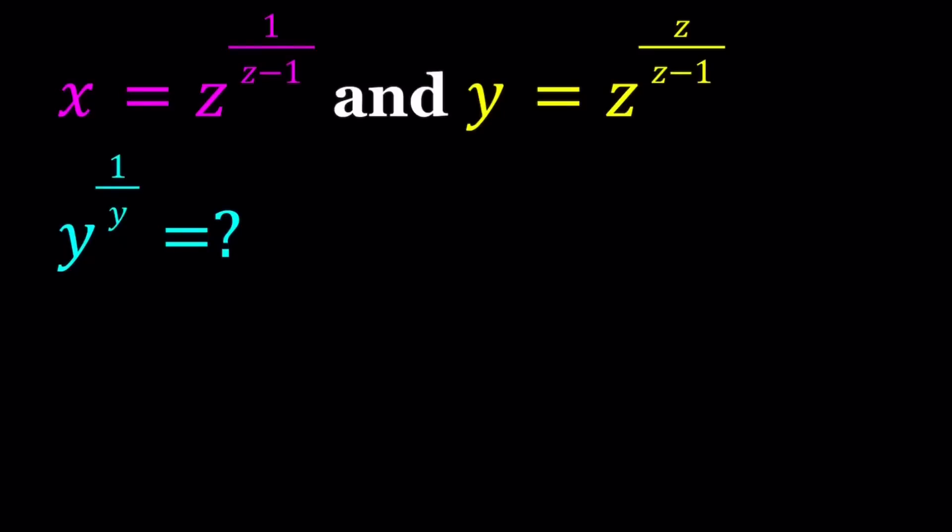Hello everyone. In this video, we're going to be solving an exponential system. We have x equals z to the power 1 over z minus 1, and y equals z to the power z over z minus 1. We're going to find the value of y to the power 1 over y in terms of x.